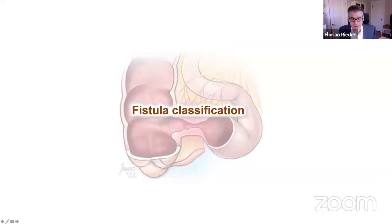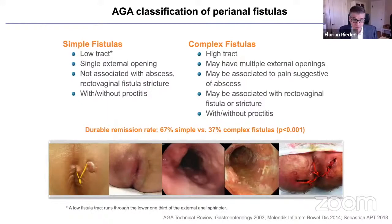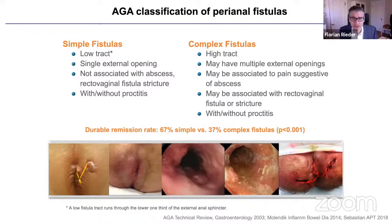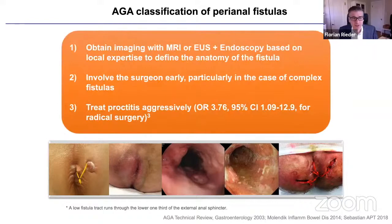How do we classify these patients? We use the AGA classification for perianal fistulas, which separates them into simple and complex fistulas. Simple fistulas have a low tract, a single external opening, no abscess, rectovaginal fistula, or stricture. A complex fistula has a high tract, multiple external openings, and may be associated with pain suggestive of abscess, rectovaginal fistula, or stricture. The durable remission rate for simple fistulas is much better than for complex fistulas, so we need to be more aggressive for complex fistulas.